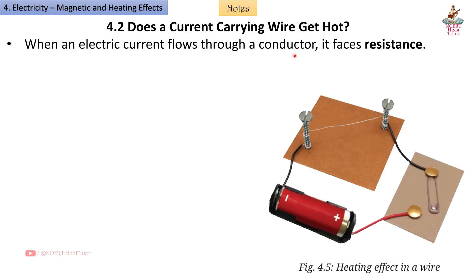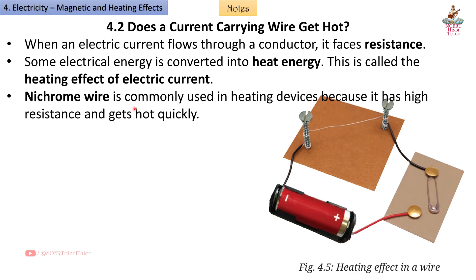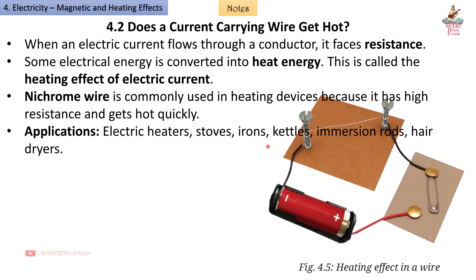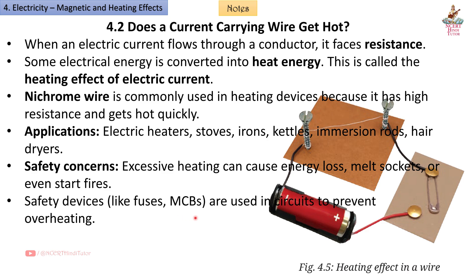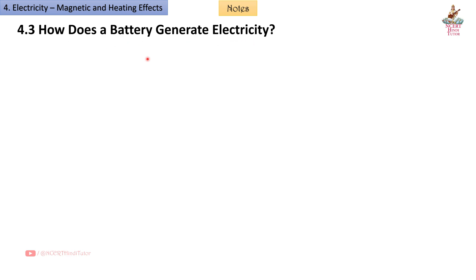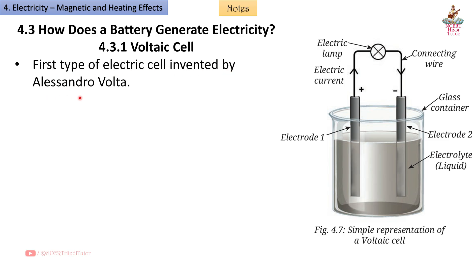4.2 Does a current-carrying wire get hot? When an electric current flows through a conductor, it faces resistance and some electrical energy is converted into heat energy — this is called the heating effect of electric current. Nichrome wire is commonly used in heating devices because it has high resistance and gets hot quickly. Applications include electric heaters, stoves, irons, kettles, immersion rods, and hair dryers. Excessive heating can cause energy loss, melt sockets, or start fires, so safety devices like fuses and MCBs are used in circuits to prevent overheating.